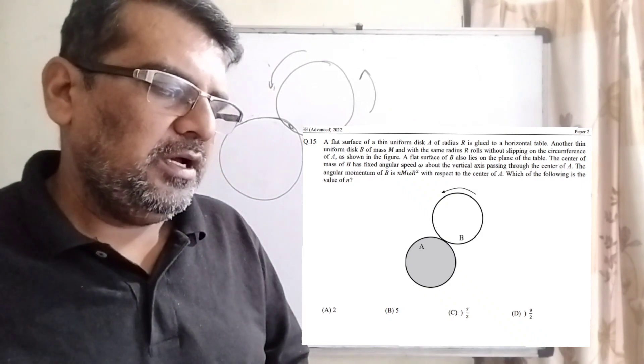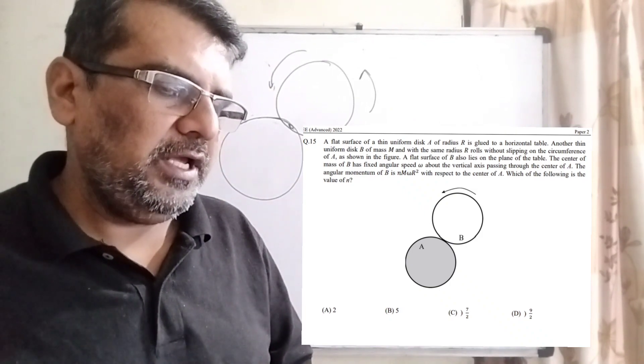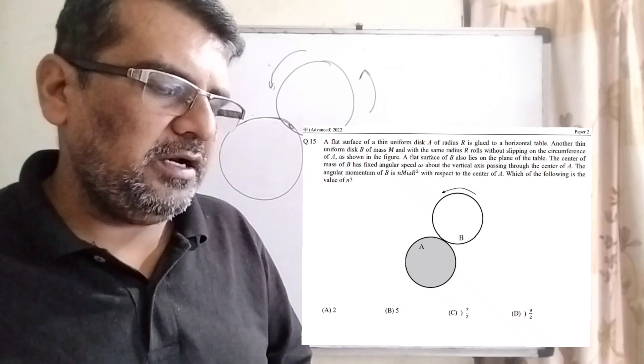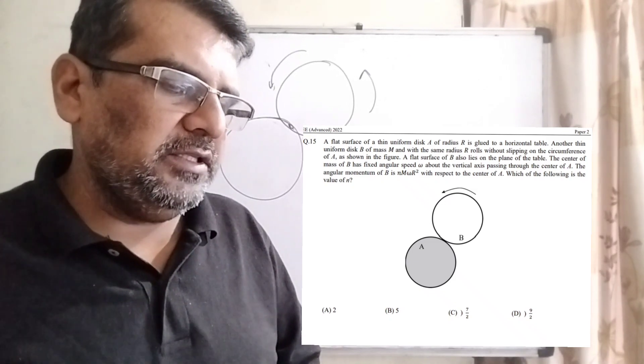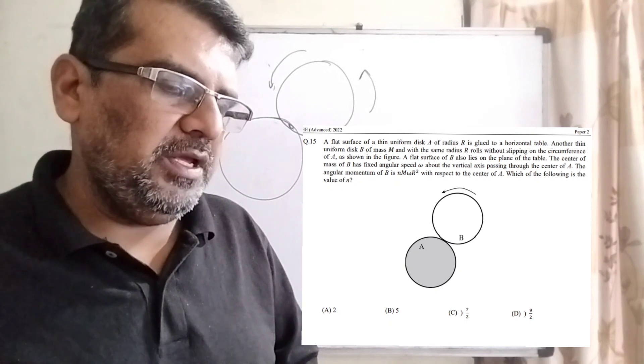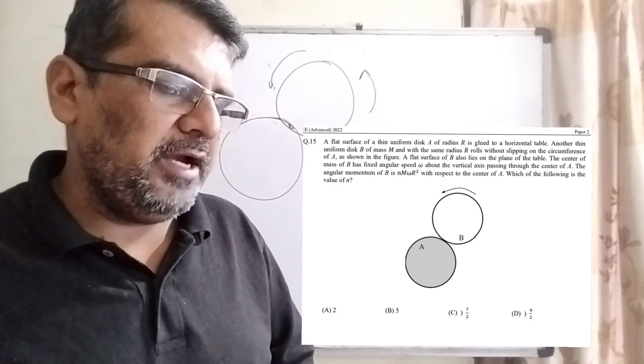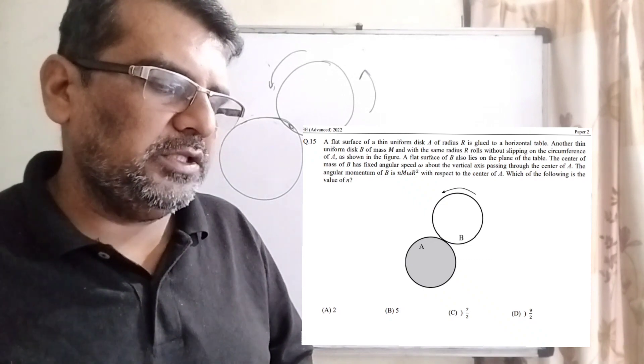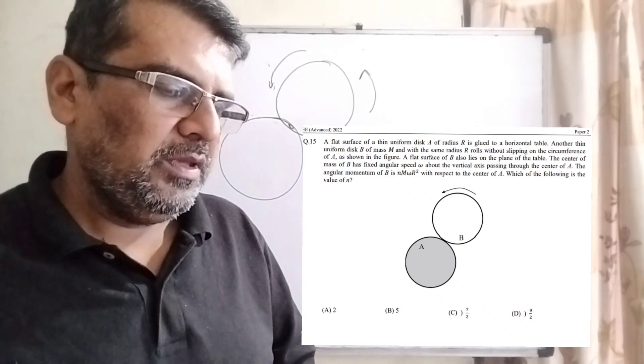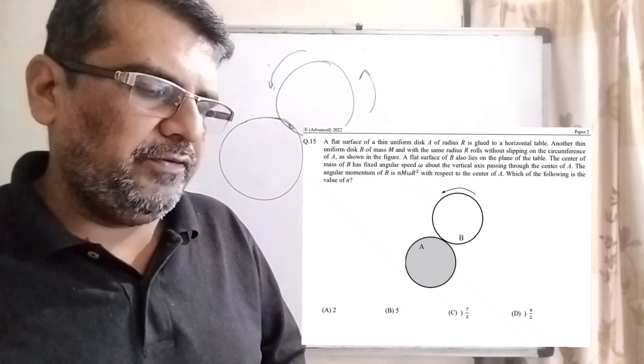A flat surface of a thin circular disk A of radius R is glued to a horizontal table. Another thin uniform disk B of mass M and with the same radius R rolls without slipping on the circumference of A, as shown in the figure.